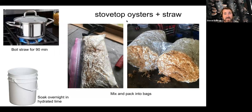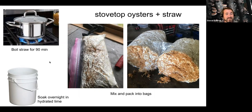You can experiment with different high-cellulose materials, even things you might harvest from your backyard. The next step is to boil it on your stove for 90 minutes, which cleans the straw and removes contaminants and microbes that might inhibit oyster growth. Then you spawn it — meaning you mix in mycelium. Spawn is something you can either make yourself or purchase from a supplier, just like buying seeds for vegetables.